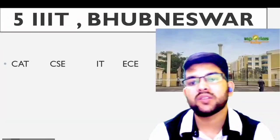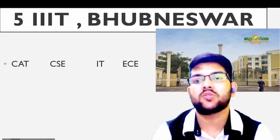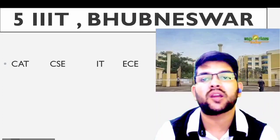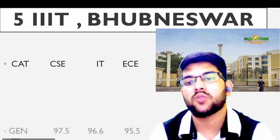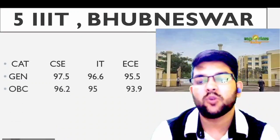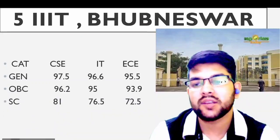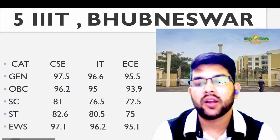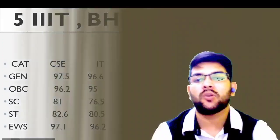Next is IIIT Bhubaneswar. Before that, I would like to clarify — it is not the Indian Institute of Information Technology; it is the International Institute of Information Technology, which is why it is considered a GFTI and not an IIIT college. For general: 97.5, 96.6, and 95.5 percentile. For OBC: 96.2, 95, and 93.9. For SC: 81, 76, and 72. For ST: 82, 80, and 75. For EWS: 97, 96, and 95 percentile.